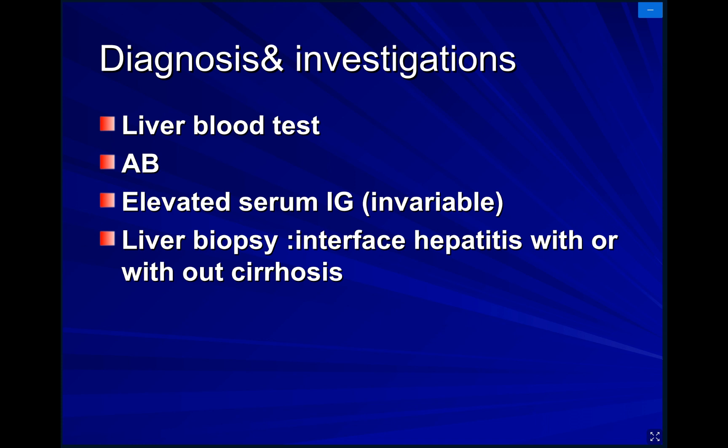There will be elevated serum immunoglobulins. We may also need a liver biopsy, which takes a piece of liver percutaneously. In case of autoimmune disease, it will give us features of interface hepatitis with or without cirrhosis.